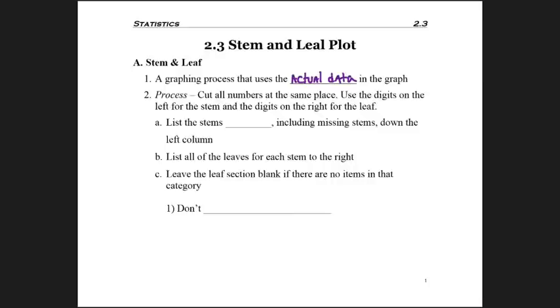So what will happen to create this is you're going to cut all of the numbers in the same place, like after the tens place or after the hundreds place, and the digit on the left of this cutting process will become your stem, and the digit on the right will become the leaf.